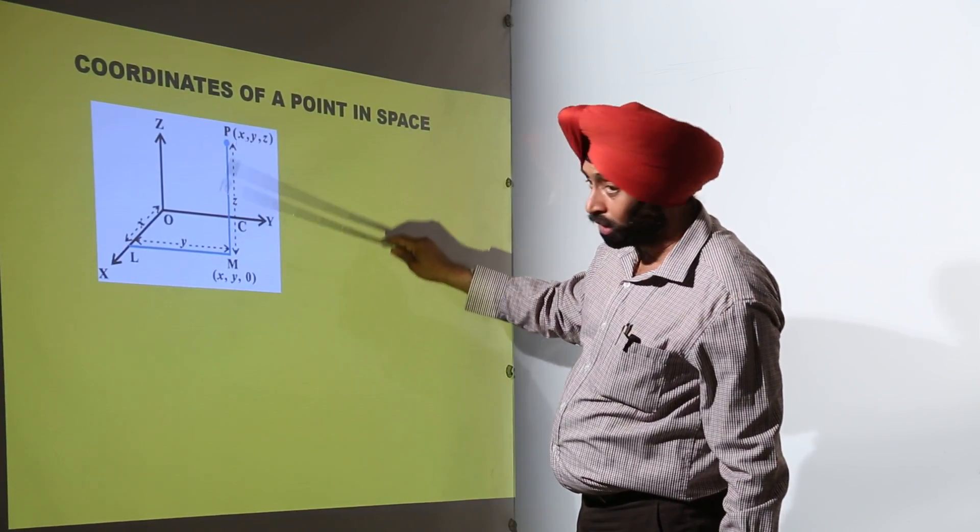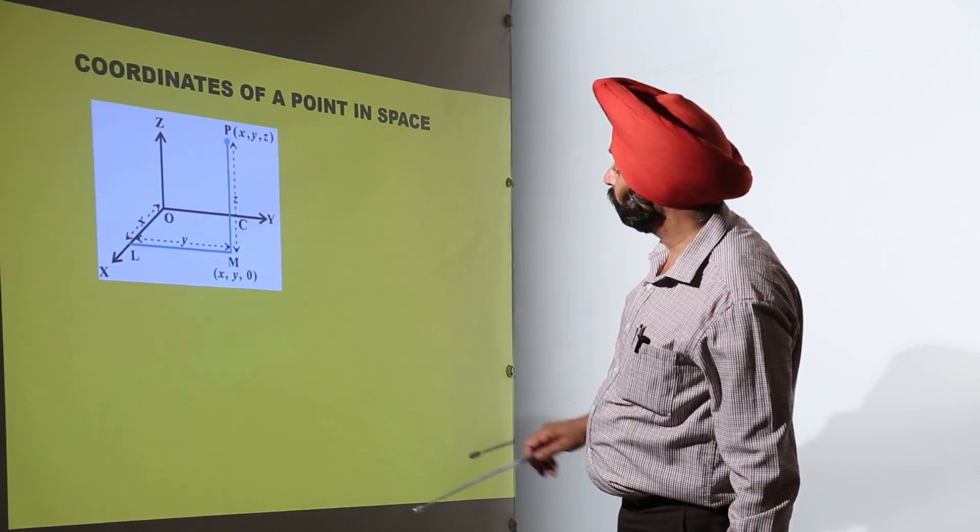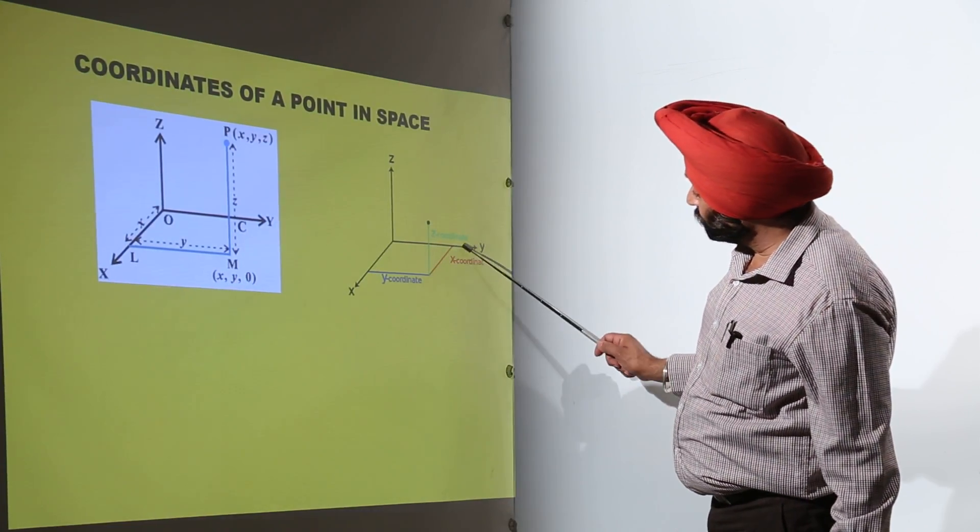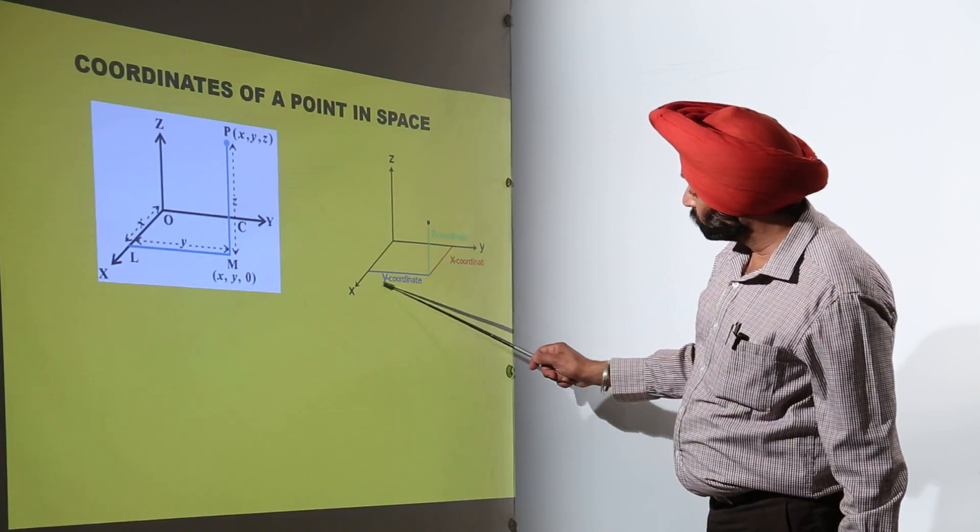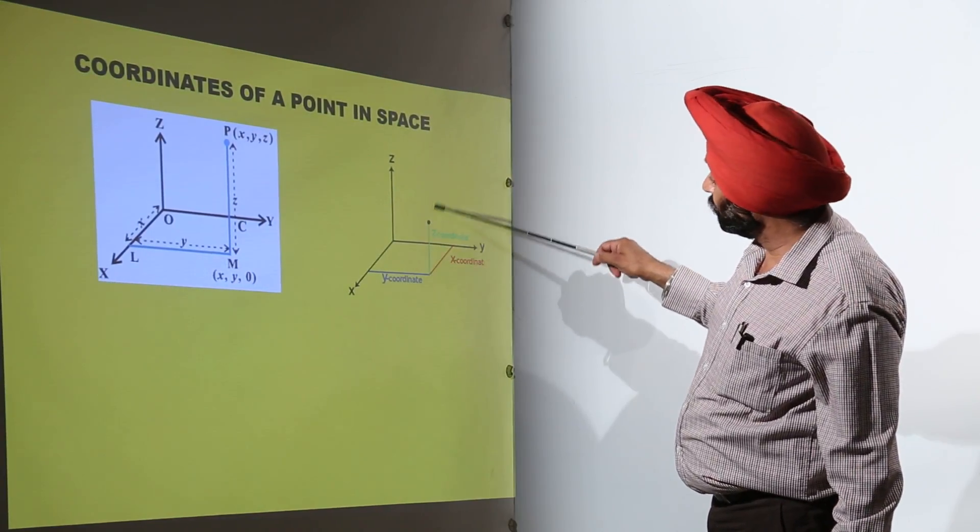And here you can just check it, if it is downwards then we are having XY0. Is it clear? Now just to make it more clear, we are having this is called the X coordinates, this is called the Y coordinates, and this is called the Z coordinates, starting from here to here.